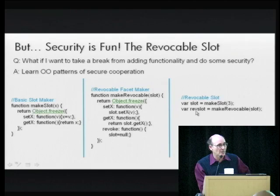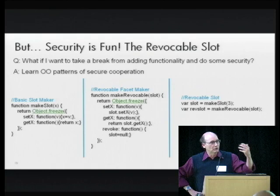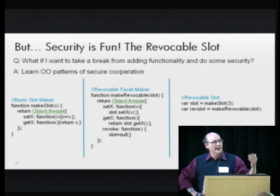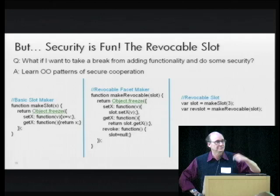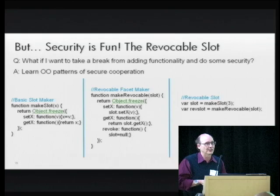You can mix and match these patterns. You can make a revocable slot simply by making a slot and invoking makeRevocable on it. If you hand someone a revocable access to your slot and they want to hand a separately revocable access to someone else, they just wrap their revocable slot with another revoker — giving you the ability to revoke each party's access independently.